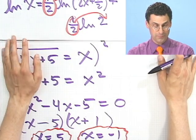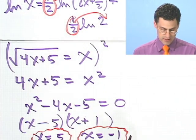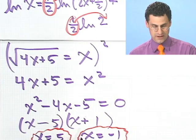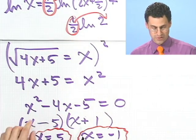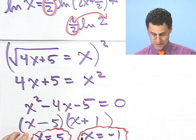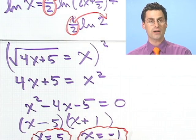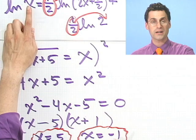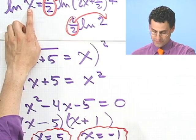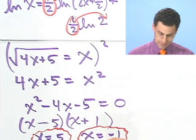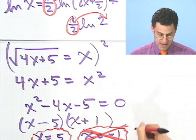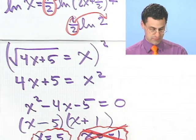That factors as (x minus 5)(x plus 1), giving x equals 5 and x equals minus 1. But you're not done until you check. Going back to the original question, if you let x equal minus 1, you immediately run into a problem: you can't take the natural log of a negative, so x equals minus 1 is an extraneous root. I'll let you verify that x equals 5 is in fact a good answer. Remember, with logs just like square roots — you aren't finished until you've checked.